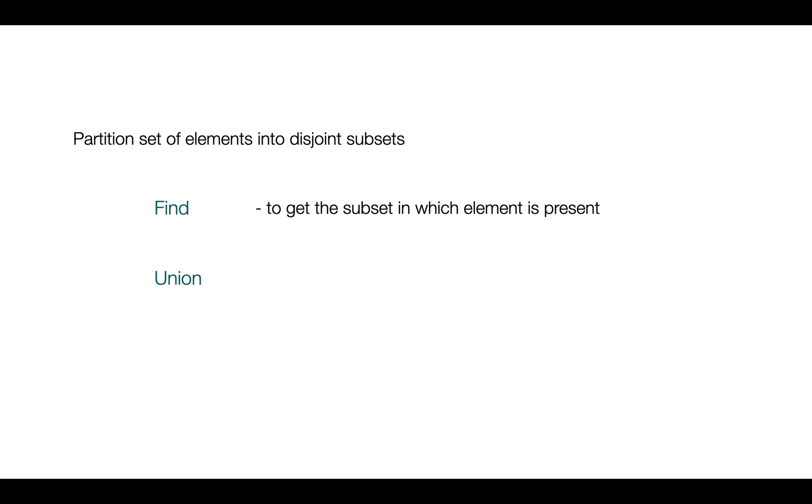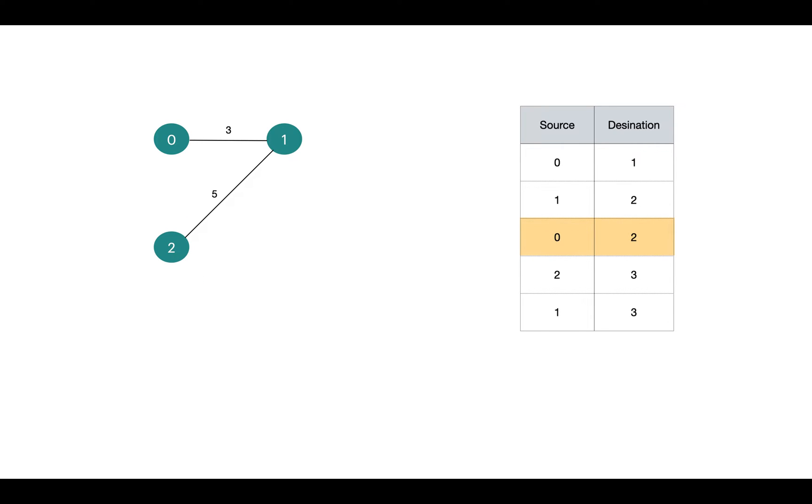First is find, where we determine in which subset the element is present. Basically we find the parent of the vertex. The idea is to check if two vertices are in the same subset or not. If they are in the same subset, that means a cycle is detected. So we take the edge and look for the parent of both vertices. If they belong to the same subset, which means the parent of both vertices are the same, that means that edge is creating a cycle. Like here, the 0-2 edge is creating this cycle because the parent of both 0 and 2 is 0.